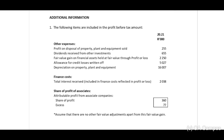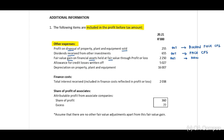The following items are included in the profit before tax amount. First, other expenses: profit on disposal of property, plant and equipment sold — we need to take this out because we need to disclose the proceeds, the cash received, on the face of our cash flow statement. Second, dividends received from other investments — we need to take this out because we need to disclose the dividends received on the face of our cash flow statement. Third, fair value gain on financial assets at fair value through profit or loss — we need to take this out because this is non-cash.